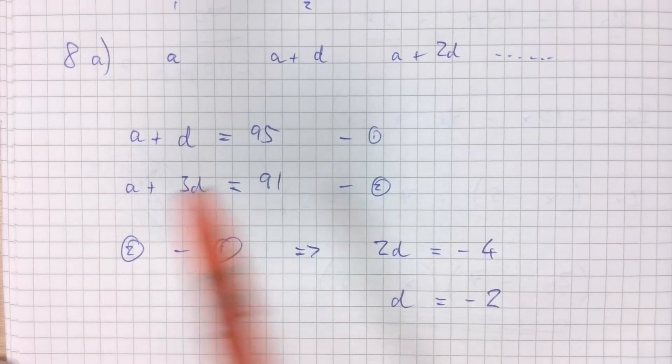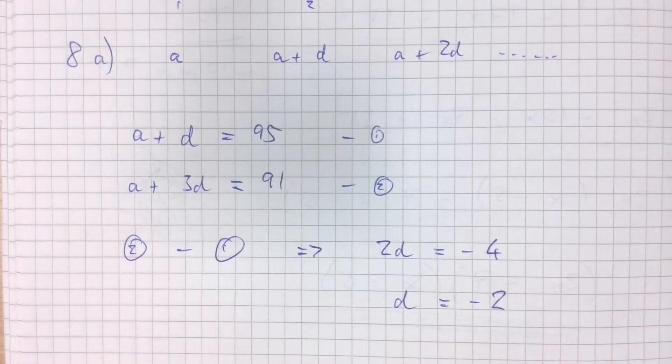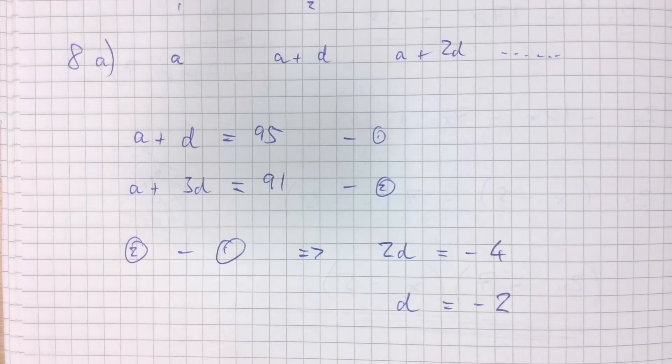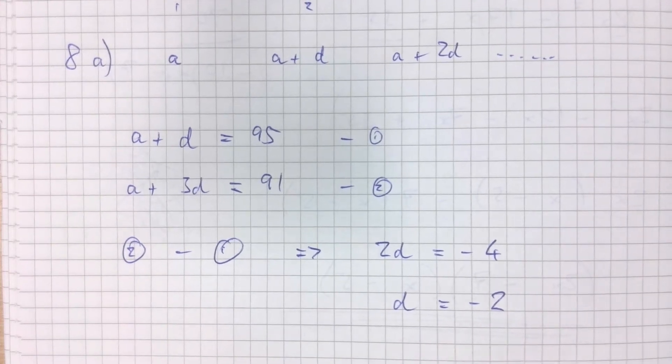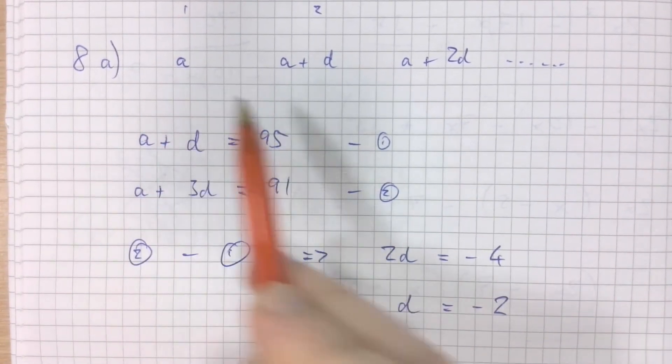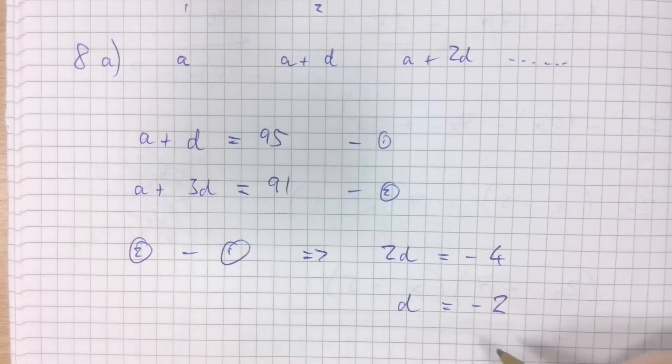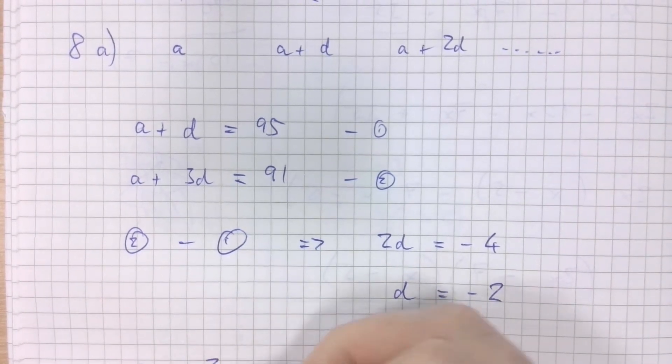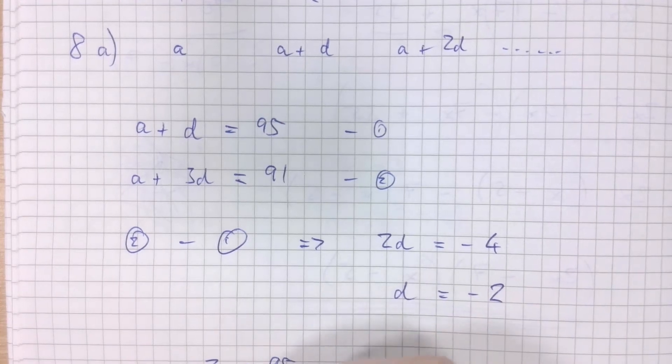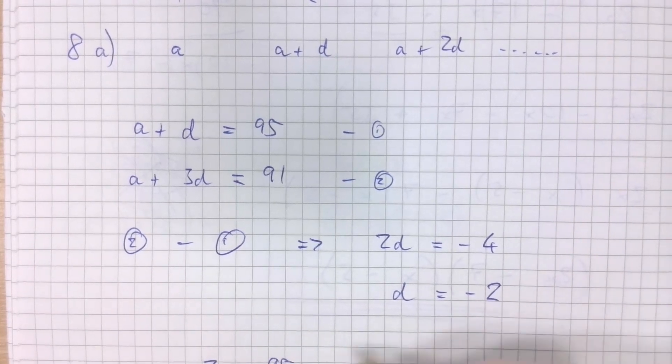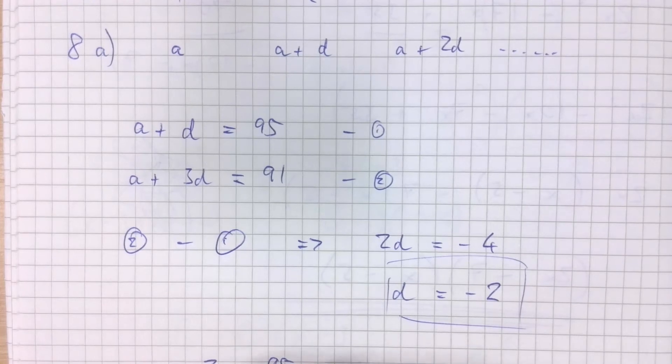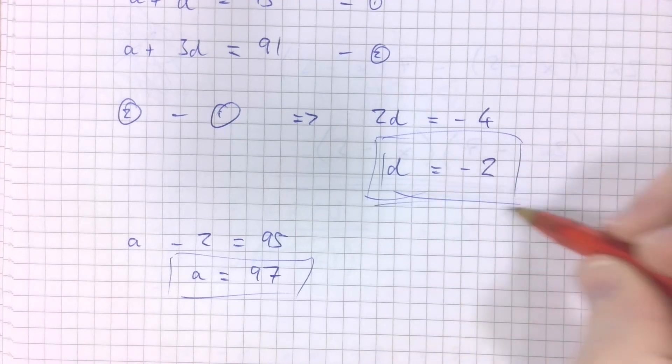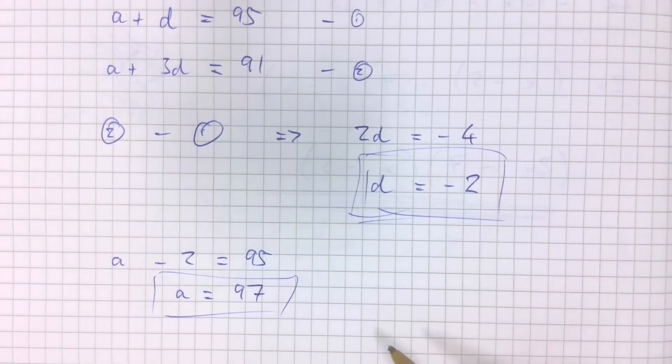You could just as easily have figured this out just by saying, well, if the second term is 95 and the fourth term is 91, the third term has got to be 93, that's taking away 2 every time. The first term, though, I can work out by immediately just substituting this difference into the equation. a plus d, that means minus 2 equals 95. So a equals 97.